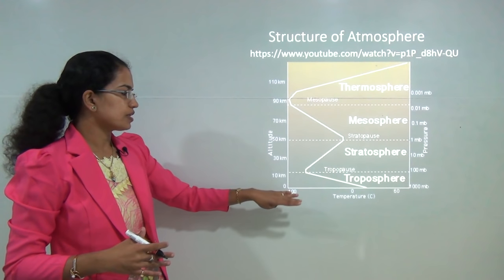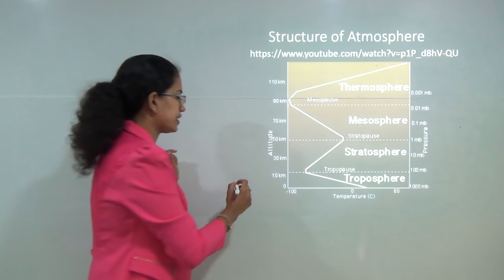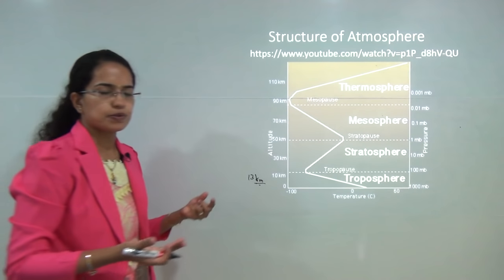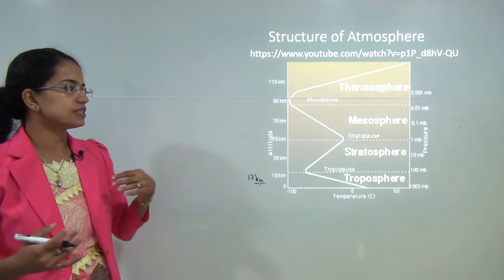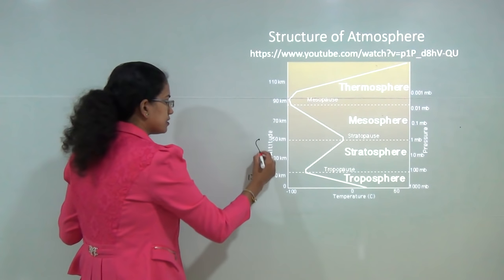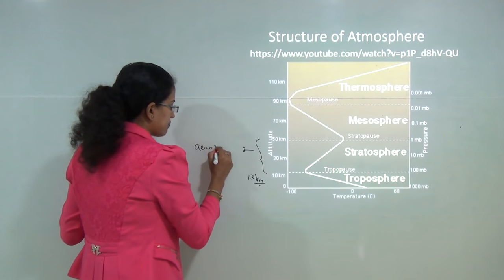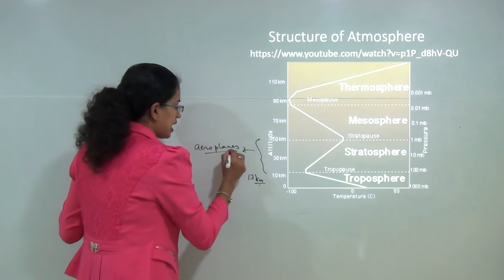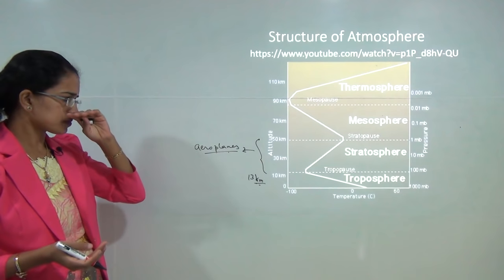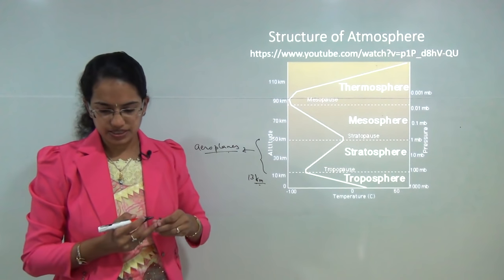This layer usually extends up to 20 kilometers, but the average height is considered 13 kilometers. Next to the troposphere comes the stratosphere. The stratosphere is the layer where most aeroplanes fly, as this belt is free of clouds and weather phenomena. It extends up to 50 kilometers.